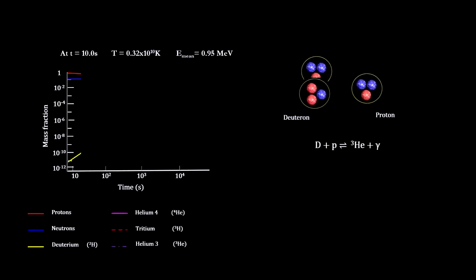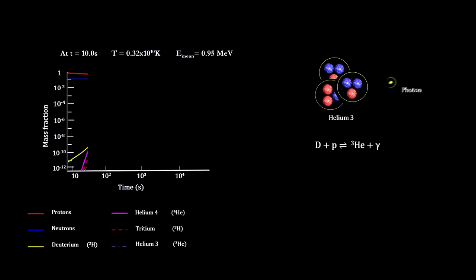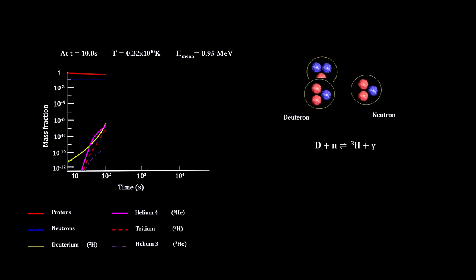As the deuterium density climbed, significant amounts of helium and hydrogen isotopes were formed, along with lots of tightly bound hydrogen.